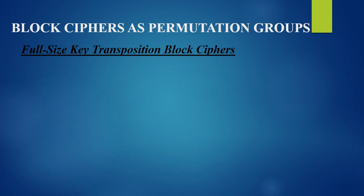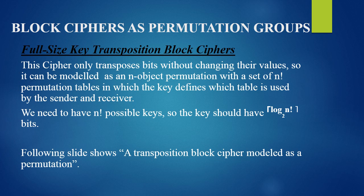Block ciphers as permutation groups. Let us first understand full-size key ciphers. A full-size key is a key that can map a plaintext block into every possible ciphertext block. That is, if we have an n-bit block of plaintext, we have 2 raised to the power n possible ciphertext blocks. So a full-size key can map that n-bit block to any one of those 2^n possible ciphertext blocks.